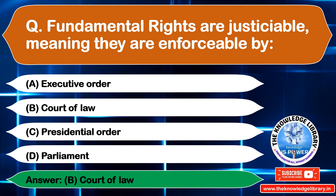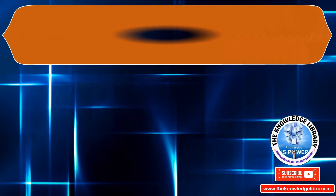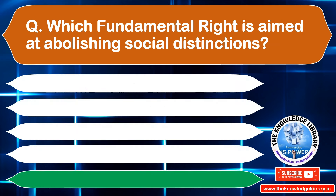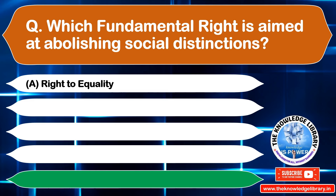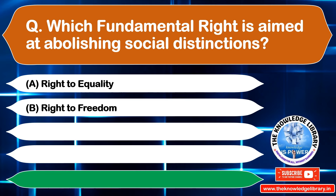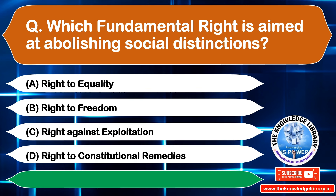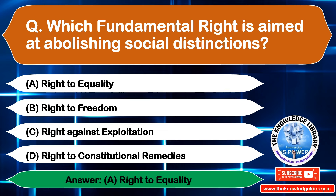The next question is: which fundamental right is aimed at abolishing social distinctions? Option A: Right to Equality, Option B: Right to Freedom, Option C: Right Against Exploitation, Option D: Right to Constitutional Remedies. The correct answer is Option A: Right to Equality.